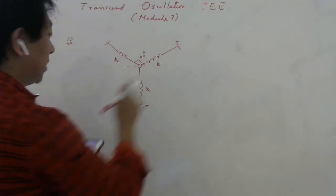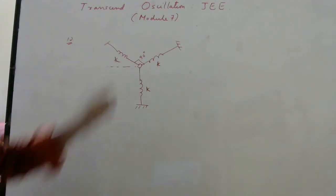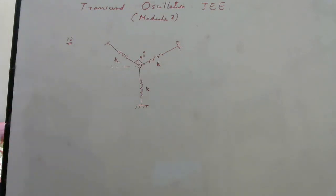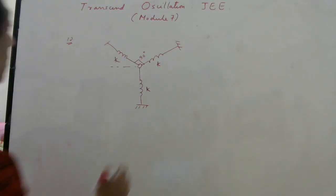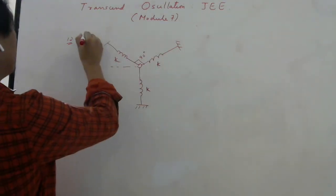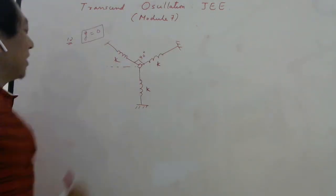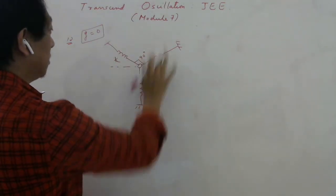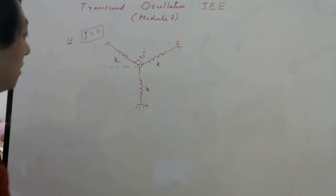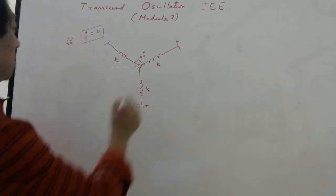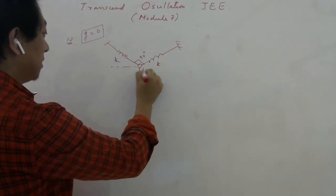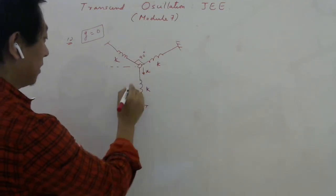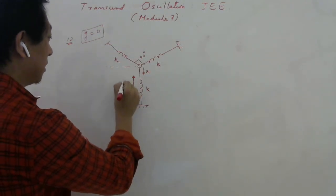Assume gravity-free space so the system is in equilibrium with all springs at natural length. The moment you depress the body by distance x against spring A, spring A compresses by x and produces a restoring spring force k·x upward. The issue is what happens to springs B and C.